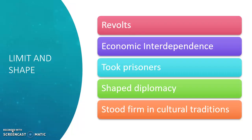The question is: how did Indian nations limit and shape the powers and ambitions of European colonial powers at this time? We are going to take a look at five different things as a way to think about what Europeans and Indian people did in their interactions, and how the actions of Indian people actually limited and shaped the ambitions of European powers.